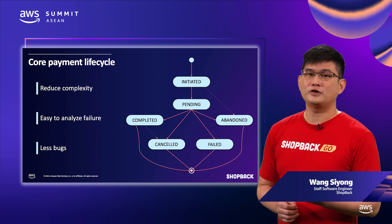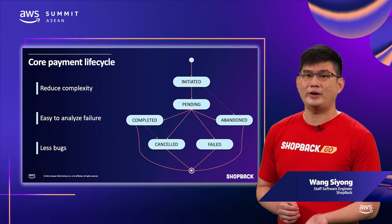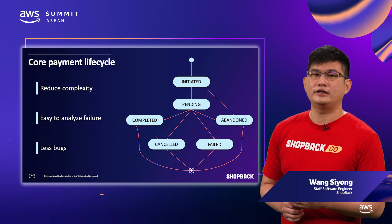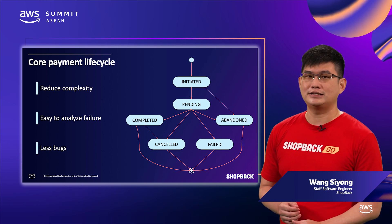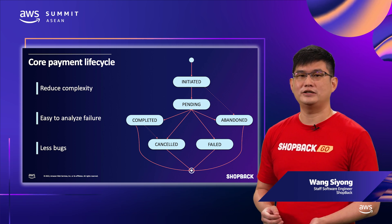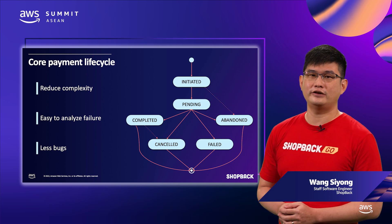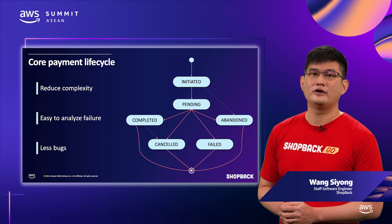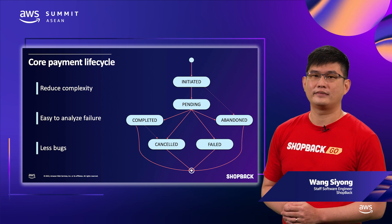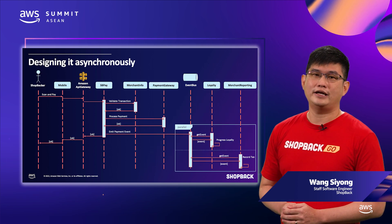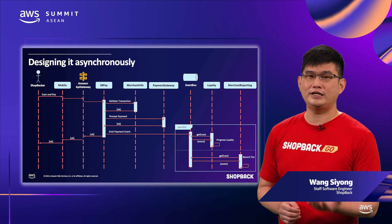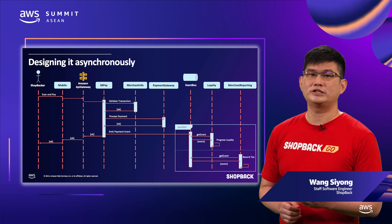However, if you just focus on the call lifecycle that ShopBack Pay service needs to facilitate, you can immediately see that the number of states becomes much less and is far more manageable. This reduced complexity also allows us to analyze failure scenarios much more easily, which means less chance of having a bug in the system.